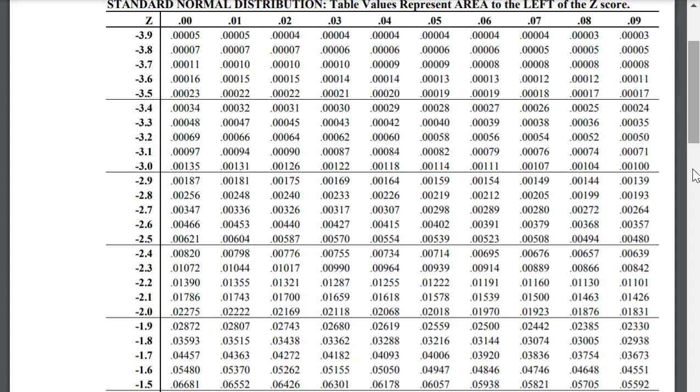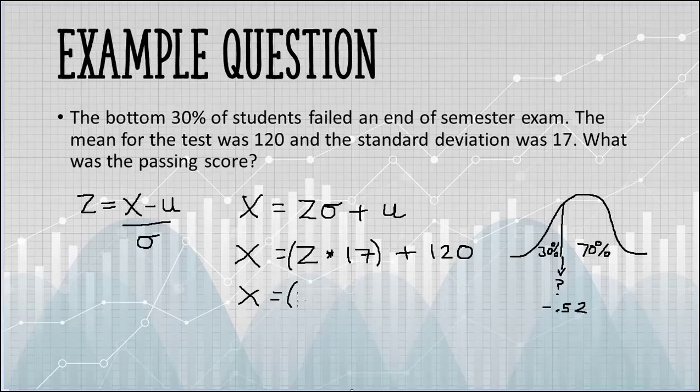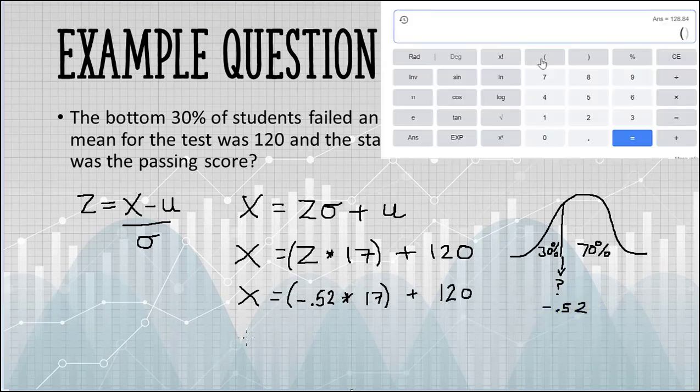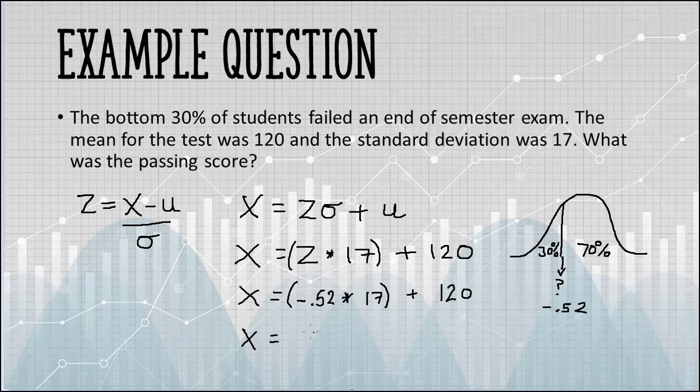I get negative 0.52. The last thing I need to do is plug that z-value into my formula. Now I can solve for x on a calculator. x equals 111.16, and that is my solution.